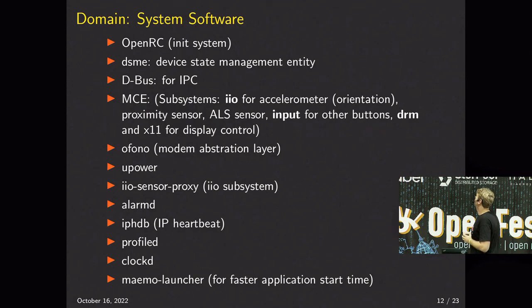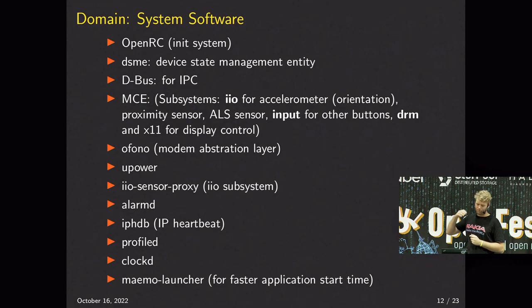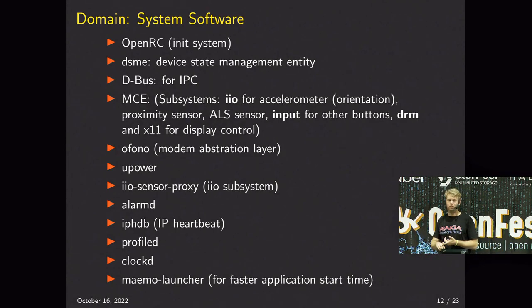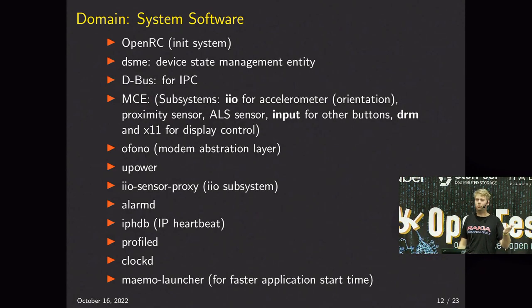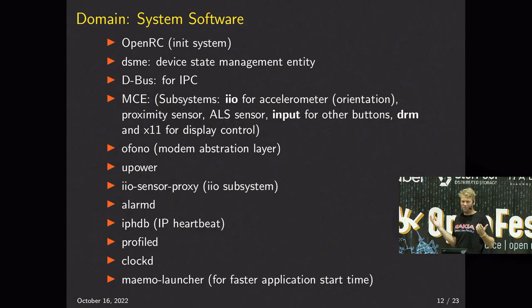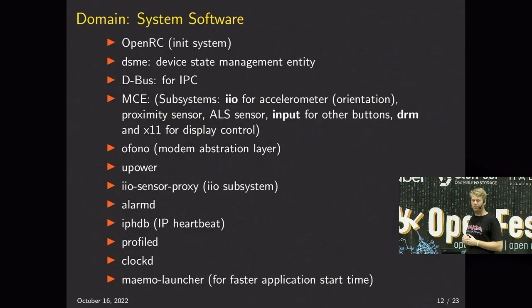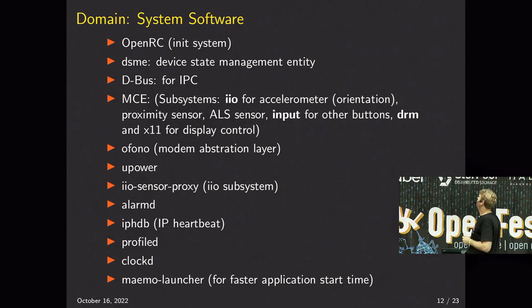There's a program inherited from the original Maemo called DSME - Device State Management Entity. It deals with some urgent things: if a service crashes that we really need, it will restart the phone. For example, if it's no longer possible to make phone calls, it will restart the phone. But if a non-essential service crashes, it will just restart that service. You don't want a phone where you cannot make an emergency call. DSME also starts and restarts other daemons, working together with OpenRC, and manages shutdown.